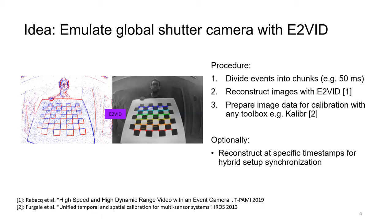A high-level overview of our method can be summarized with the following procedure. First, we divide the event data in chunks of constant time duration. We reconstruct the image from the event data using e2vid. Lastly, we prepare the image data according to the calibration toolbox of choice. Optionally, if extrinsic calibration to other sensors needs to be done, we reconstruct the image at specific timestamps for hybrid setup synchronization.